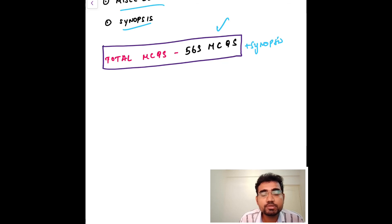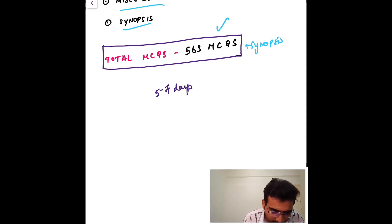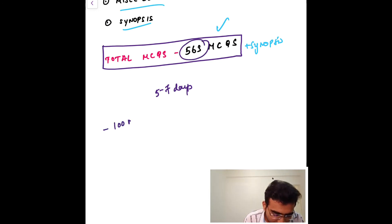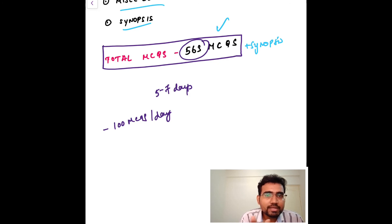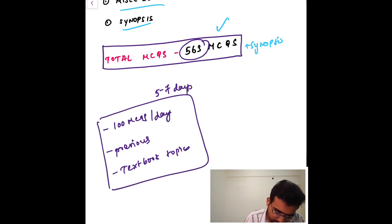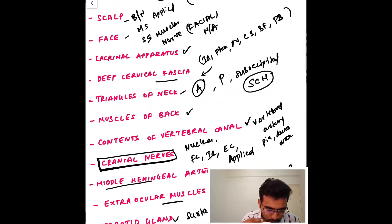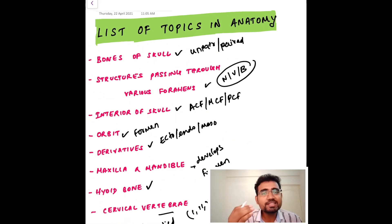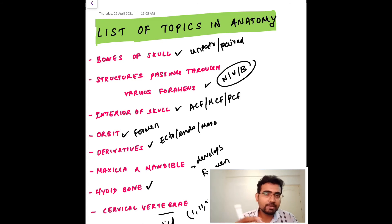So your Pulse guide gives 563 MCQs plus the synopsis for anatomy. Looking at the timetable I have framed, I have given five to seven days for anatomy. Taking a calculation, you should read approximately 80 to 85 MCQs per day plus the synopsis, plus previous year MCQs, plus the textbook topics mentioned previously.